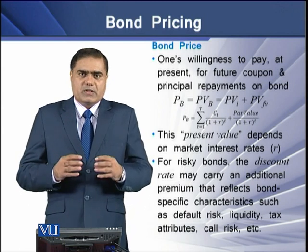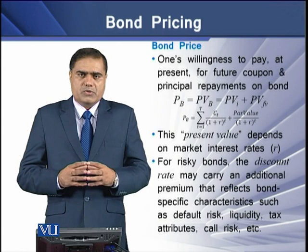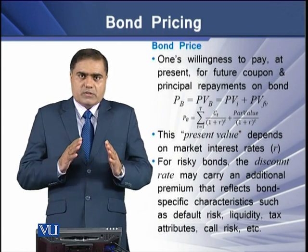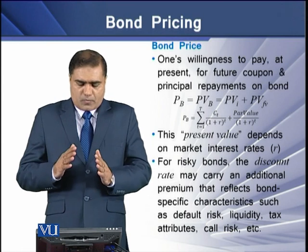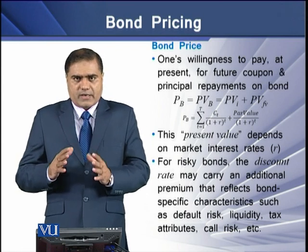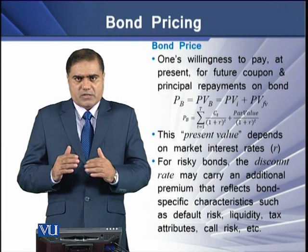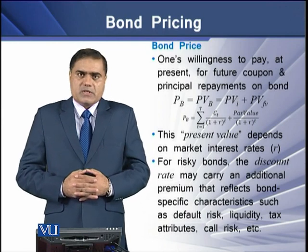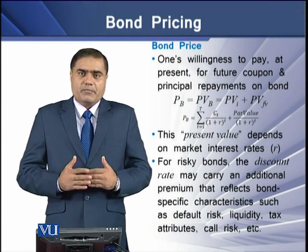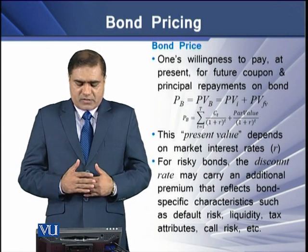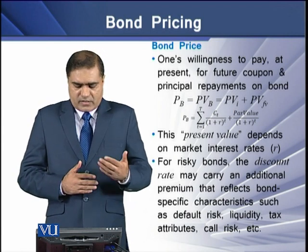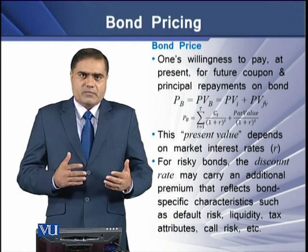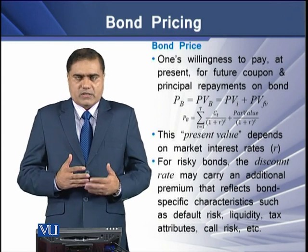To determine these present values, we use a certain discount rate. This present value then depends upon the market interest rate, and that market interest rate is used as the discount rate. For risky bonds, the discount rate may carry certain additional specific characteristics like default risk, liquidity risk, and other attributes like call risk.